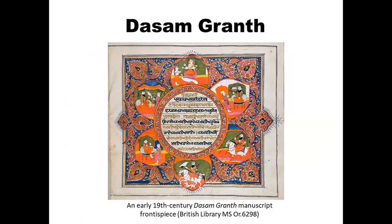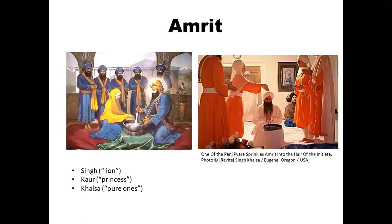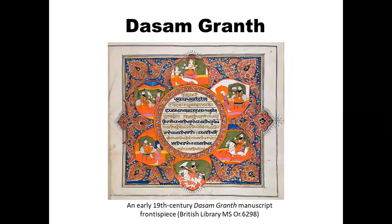Once you undergo this ritual today, you become a Singh or lion, or if you're a woman, a Kaur or princess. The people who become part of this form the Khalsa — the pure ones. The first five were known as the Five Beloved Ones. The Dasam Granth is also associated with Gobind Singh — it's another spiritual text within Sikhism. Many Sikhs debate over whether it's authentic, as it has some controversial content including some explicitly erotic material and maybe a little profanity.